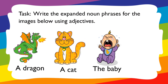Now you have to write the expanded noun phrases for the images below, using adjectives just like we practiced. I'd like you to use more than two or three adjectives for each noun phrase. We have the noun phrases: 'a dragon,' 'a cat,' and 'the baby.' Have a go at this and write beautiful adjectives to expand the noun phrases.